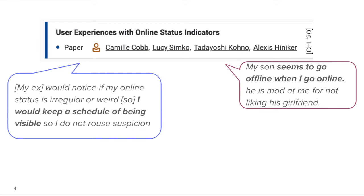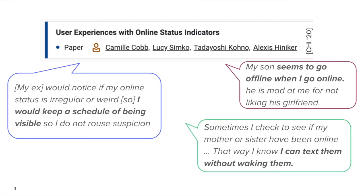In some cases, participants discussed actively observing other people's OSIs rather than just passively noticing them while using the app. For example, one participant said she sometimes checks to see if her mother or sister have been online — that way she can know whether or not it's okay to text them without waking them up.